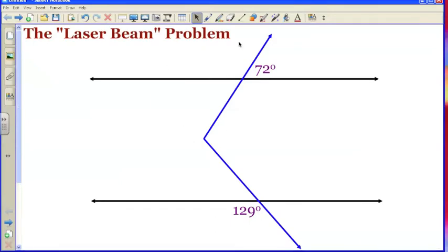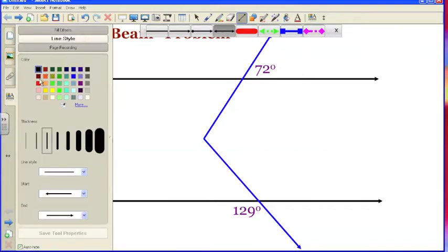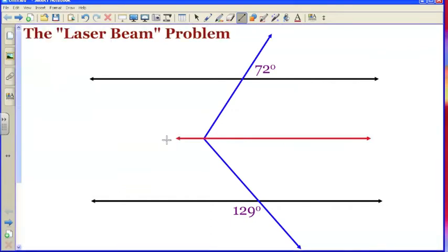The first thing students should do when they start a problem like this is draw in the laser beam. I'm gonna get a nice bright red laser and just go right through there. It's important that it goes right through there. We're assuming these lines up here are parallel to each other, and I want to draw that laser beam so it's parallel to those first two lines.